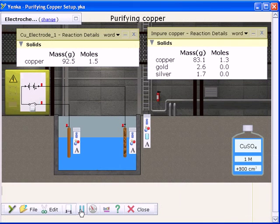There is a range of ready made models on the Yenka website which you can use and modify. For example, see how copper is purified using electrochemistry.